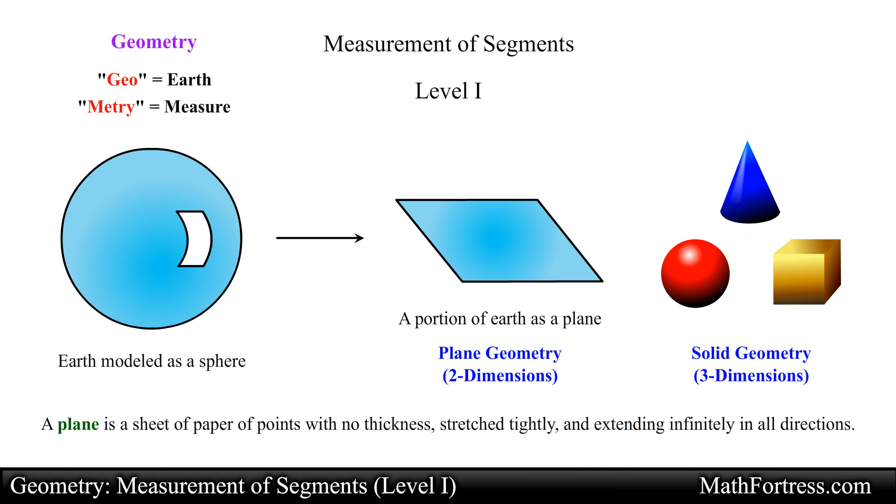In the following series of videos we will learn how to measure line segments. In the previous video we defined a line segment, also referred to as simply a segment, as a straight line that is made up of points that has a definite beginning and end. These two points are referred to as the endpoints of the segment. Because segments have a definite beginning and end, they can be measured and have a unique length.